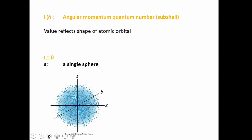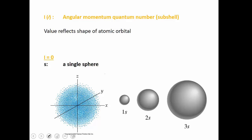When we compare S subshells within different shells, the S subshell in the first shell is smaller than that in the second shell — 1S and 2S — and in the third shell it's even bigger, but they all have that same spherical shape. The 1S would be inside of the 2S, which would be inside of the 3S. The S subshell has a capacity of two electrons, an L value of zero, and is composed of a single sphere. S subshells are found in all shells.